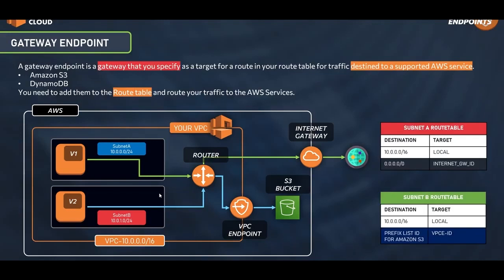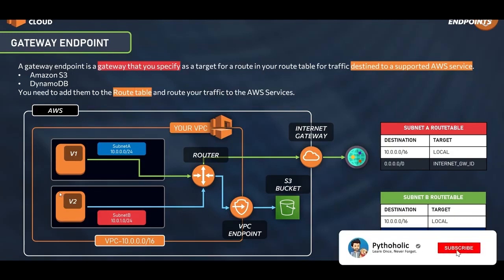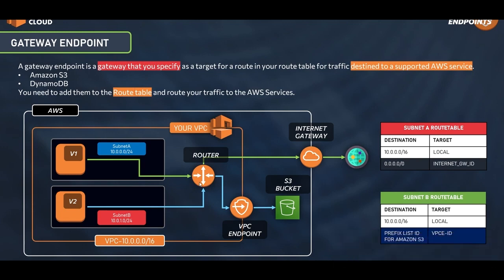What we need here is a public instance that can connect to the internet gateway and access our S3 buckets. The other approach is a private instance which should be able to access the S3 bucket using a VPC endpoint — that is our main goal. We'll have one public instance and one private instance and see the differences between them.